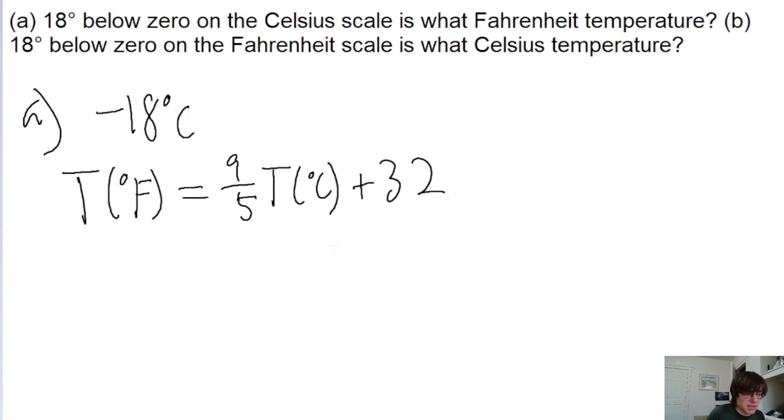So let's plug in negative 18 degrees Celsius. So 9 fifths times negative 18 degrees Celsius plus 32, which gives us negative 0.4 degrees Fahrenheit.